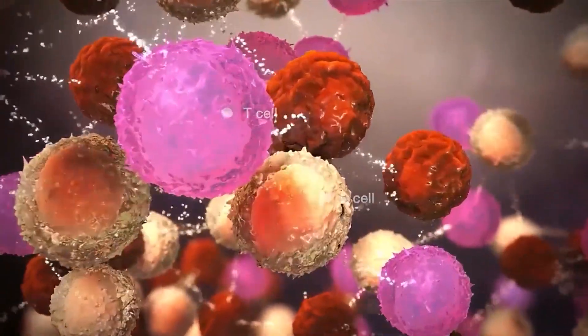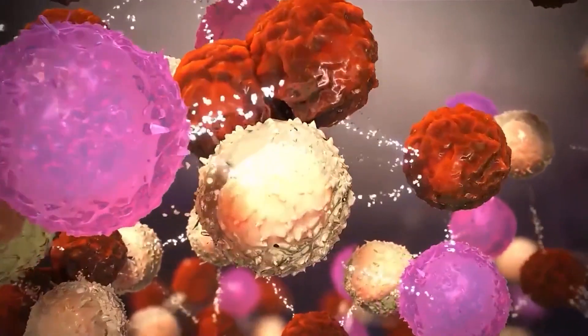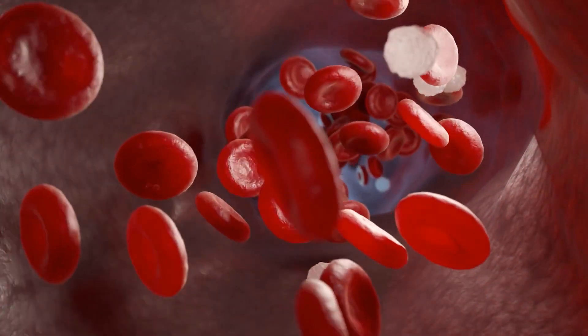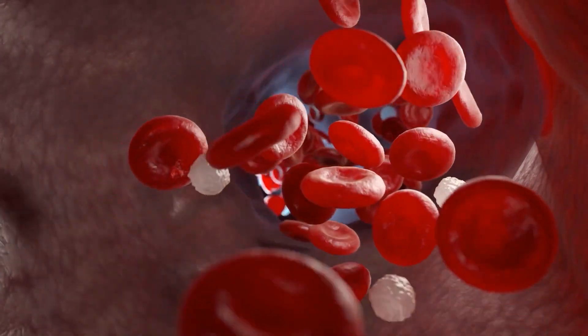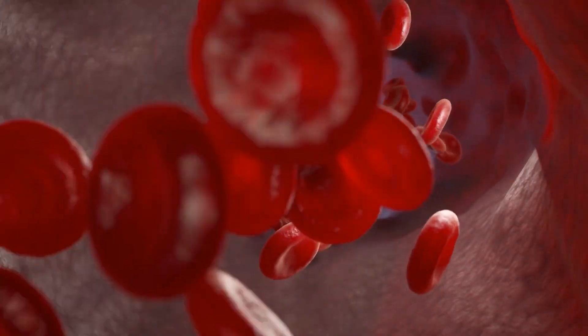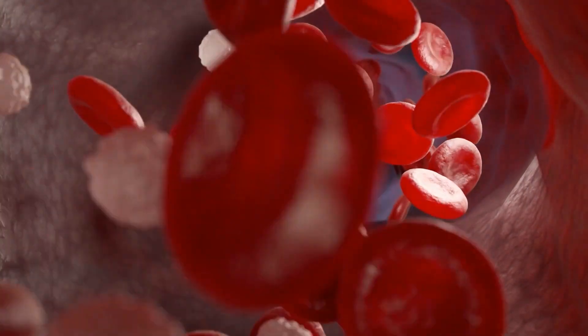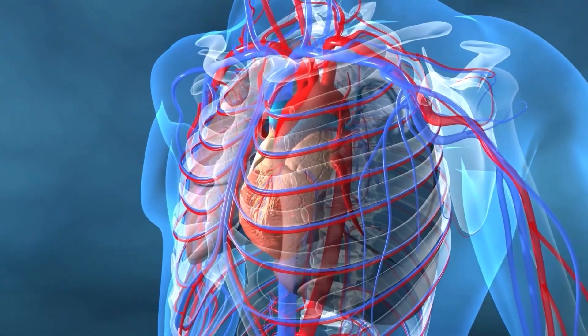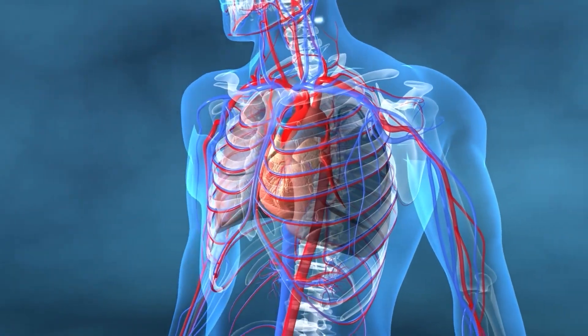B cells mature in the bone marrow, hence the name B cell. Cells that eventually become T cells travel from the bone marrow to the thymus by way of our bloodstream where they mature, hence the name T cell. The thymus is located just above the heart, behind the sternum or breast bone.